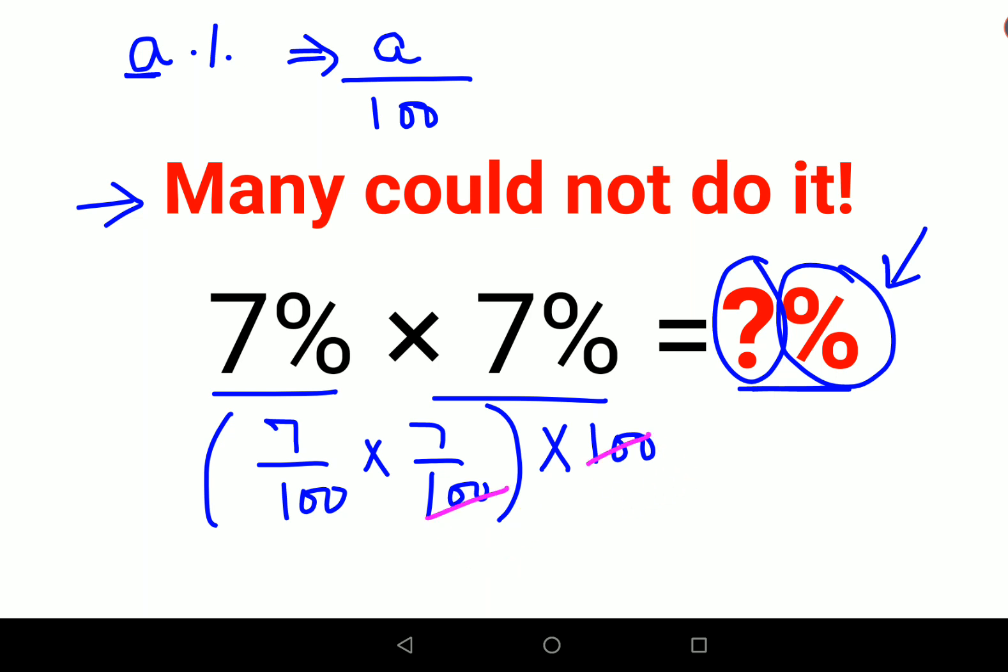Now if you see, this is cancelling, so we are left with 7 × 7, that gets you 49/100, so you get 0.49%. Please understand, the answer for this particular question is 0.49%. I hope this is very clear to everyone.